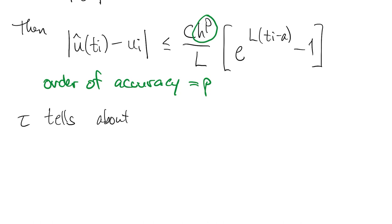That is to say, the order of the local truncation error from taking just one step is the same order as the global error over all the steps.